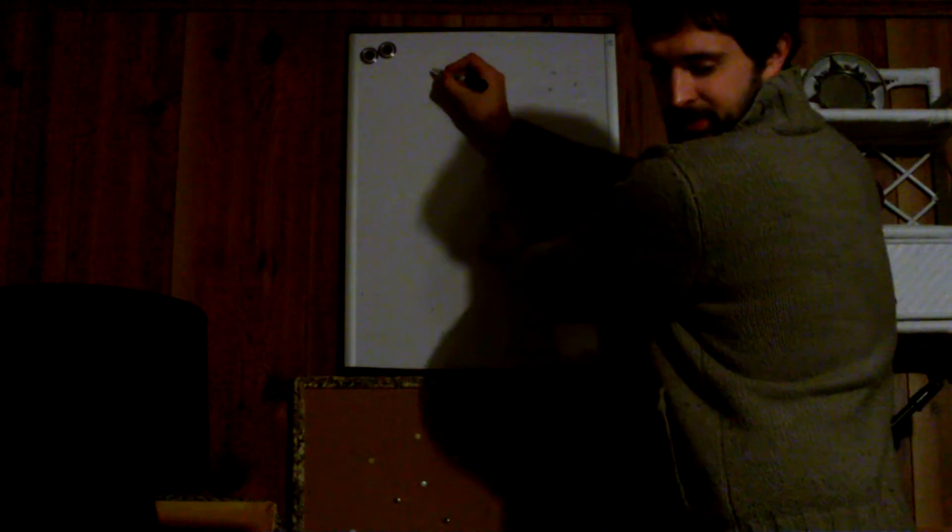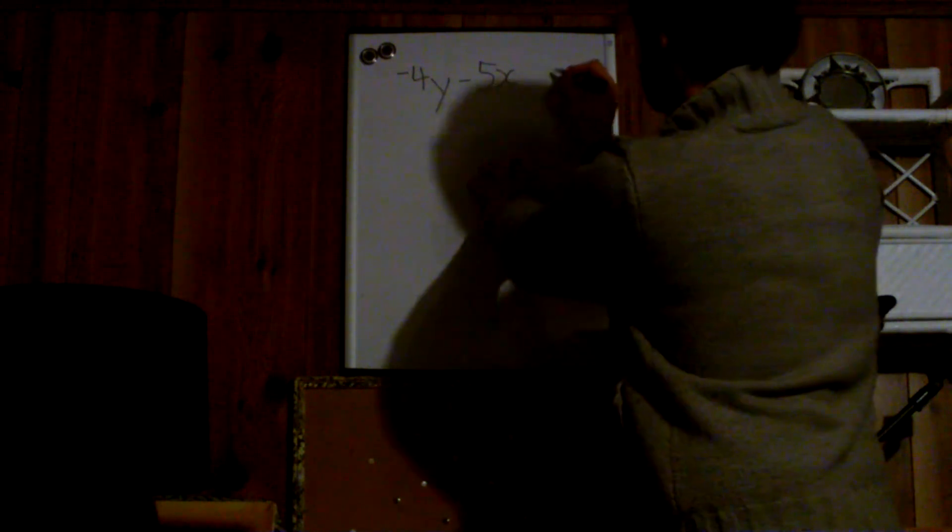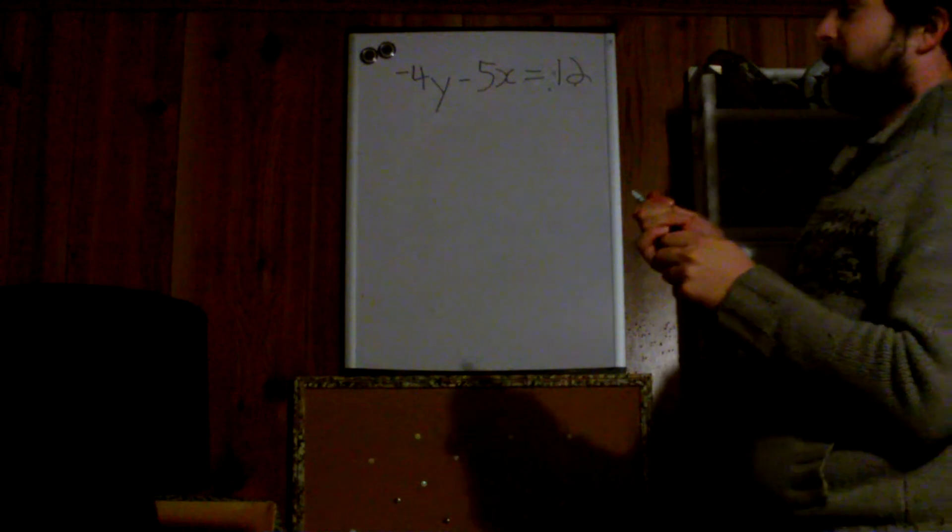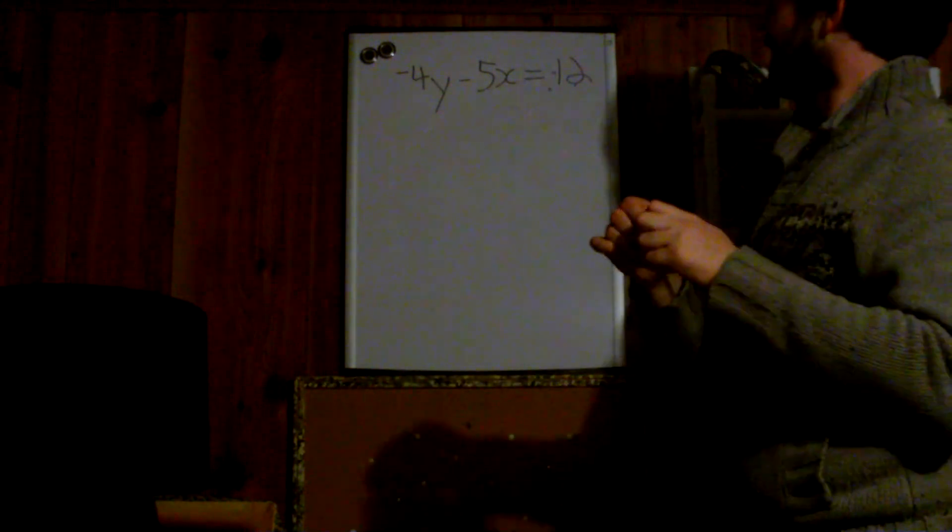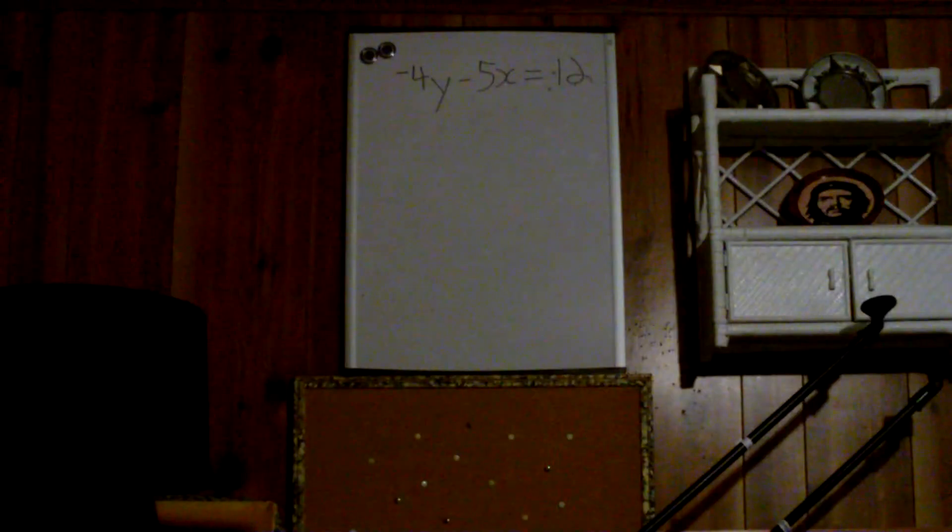Okay, you are trying this one. Negative 4y subtract 5x equals 12. Alright, get it in 5 minutes.